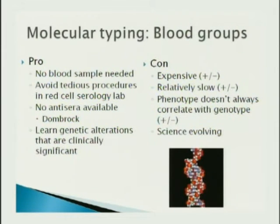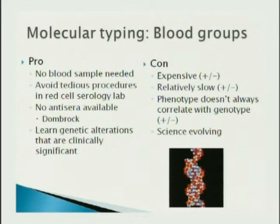Another con of molecular typing is that the phenotype doesn't always correlate with the genotype. Your anti-sera is directed against an epitope, and depending on where you look in the gene, you might think they're positive or negative for an antigen when in fact it's a variant expression of that gene. The science is still evolving.